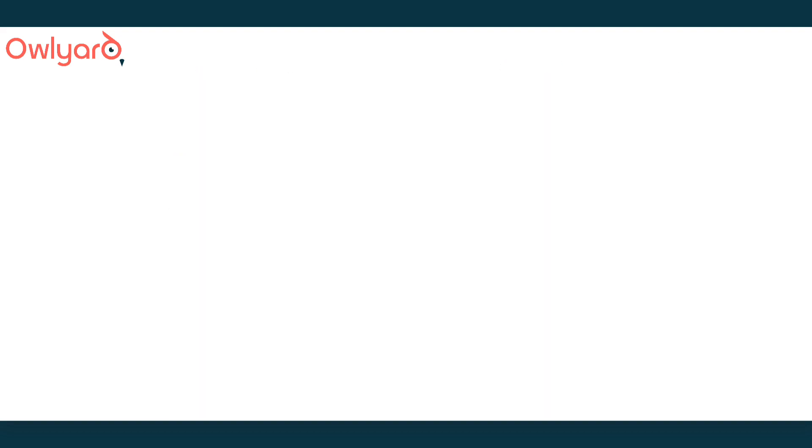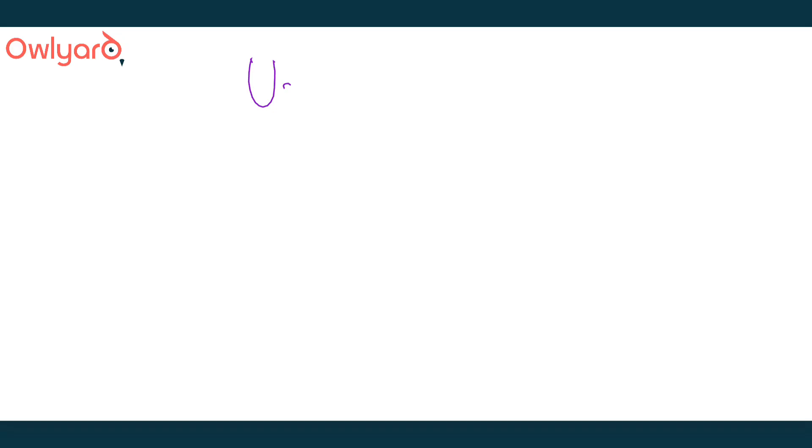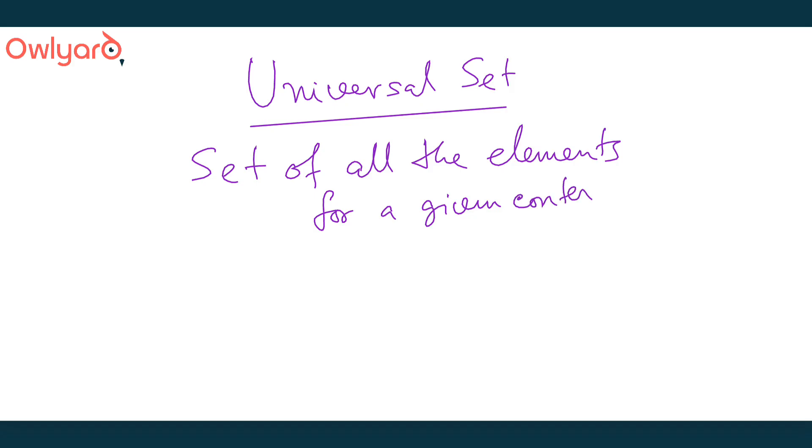The final thing that I will cover today is the concept of universal set. The literature says that it's actually a set of all the elements. Now if I just say that I'm trying to construct a set that contains all the elements, it doesn't mean much. Does it mean all the numbers and all the days of the week, etc.? That's not actually what it means, because I'm not done yet. It means the set of all the elements for a given context. So it's context-specific.